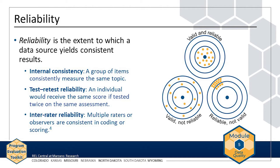For interviews or observations, look at the extent to which multiple raters or observers are consistent in coding or scoring. For example, if the AMP evaluation team conducts observations of tutors' instructional practices, the team can expect that each rater or observer will similarly score the quality of an individual tutor's instructional practices. This is called inter-rater reliability.